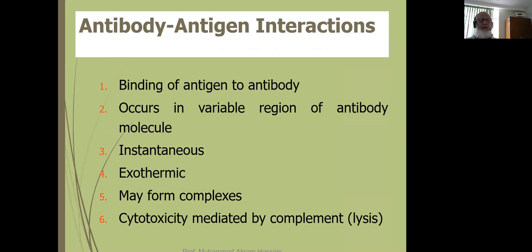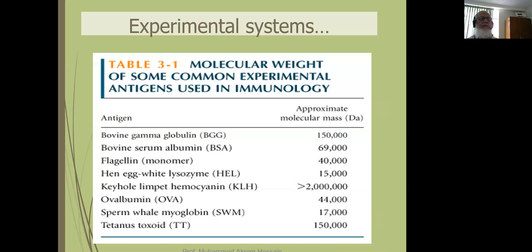Antigen-antibody reactions: the main function of the antibody is to bind with the antigen. The binding of the antigen and antibody occurs in the variable region of the antibody molecule — we will discuss the variable region in the antibody lecture. This reaction is instantaneous and exothermic, and may form complexes. When antigen and antibody are bound, they may lead to lysis by complement-mediated lysis.